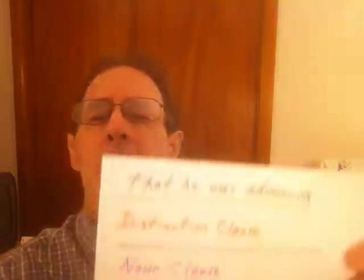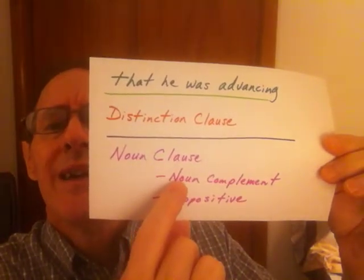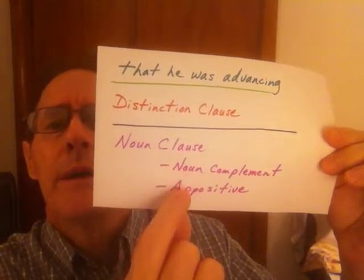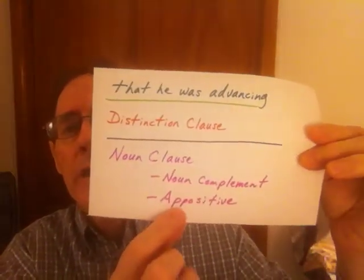Hey, how you doing? Referring back to my previous grammar videos, I'd like to try to make a clarification. It's a little weird, but I'd like to clarify something. I'd like to talk about what might possibly be the difference between a noun complement and an appositive. The difference between a noun complement and an appositive — I'd like to quickly touch on that.